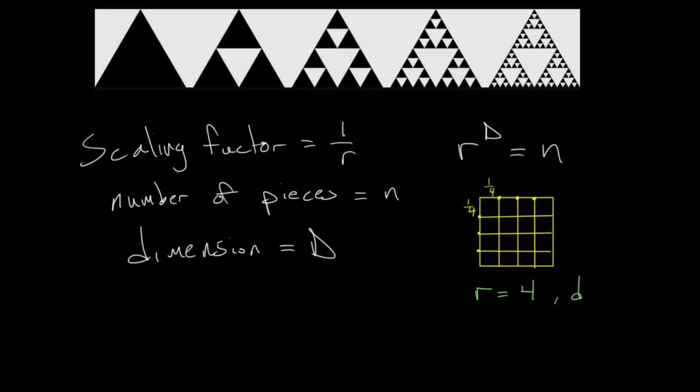Capital D is 2, and the number of pieces we end up with, n, is 16. You can see that when we plug in the values to this equation, 4 to that dimension 2 is equal to 16. 4 times 4 is 16.